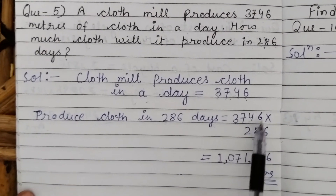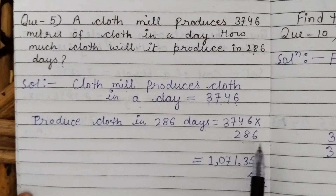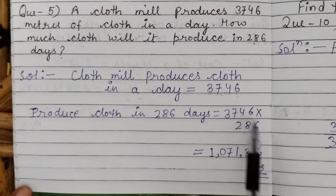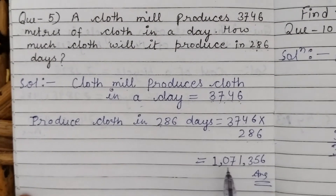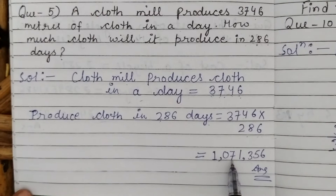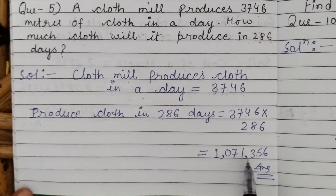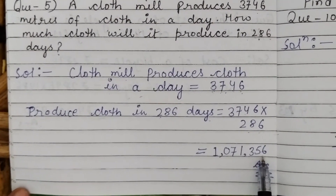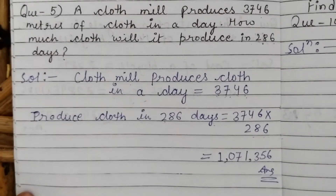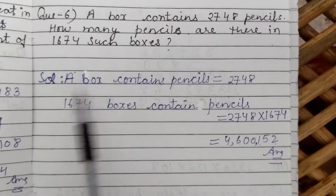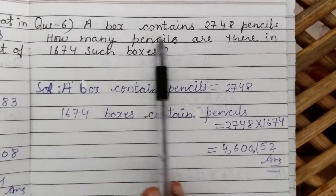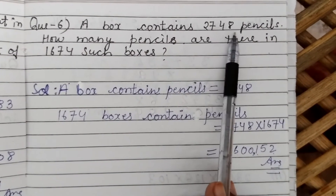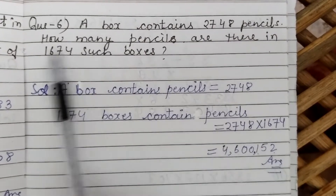We will multiply the daily production by the number of days asked, and after multiplying the answer will be 1,07,01,356. Is that clear? Now come to the next question: a bag contains 2,74,348 pencils.